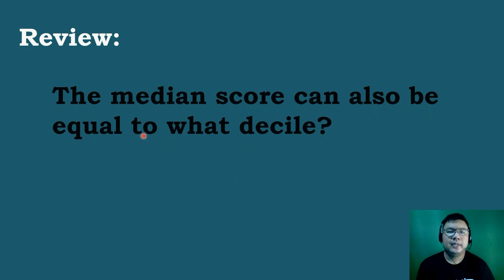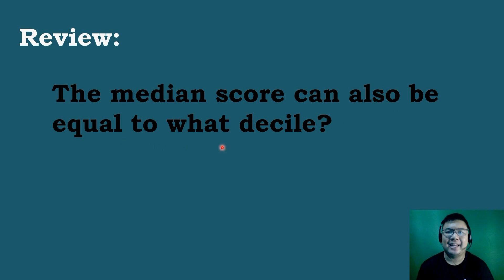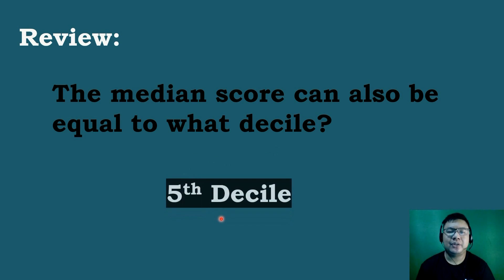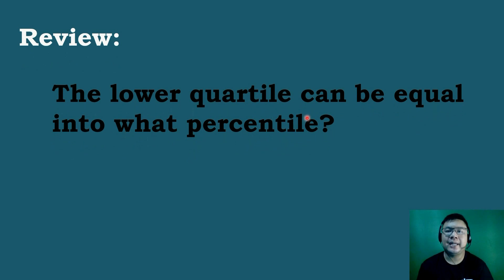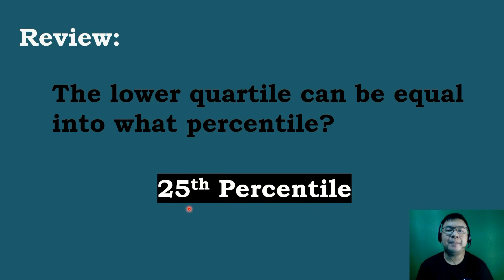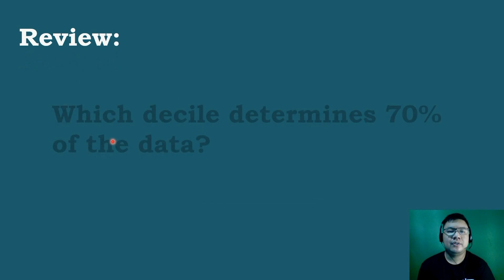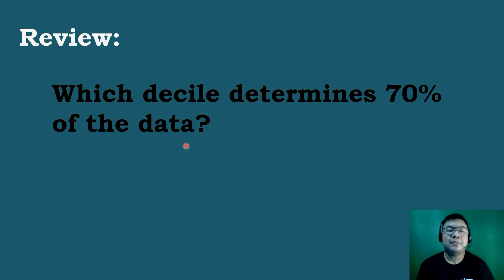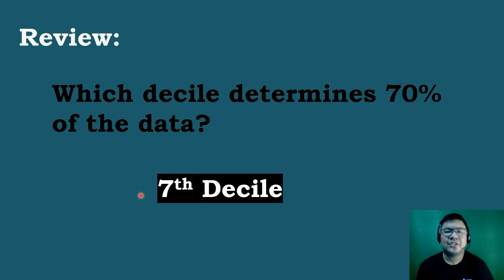Let's have first a review about the measures of position. The median score can also be equal to what decile? The correct answer is the 5th decile. Next question: the lower quartile can be equal to what percentile? The correct answer is the 25th percentile. Third question: which decile determines 70% of the data? The correct answer is the 7th decile.